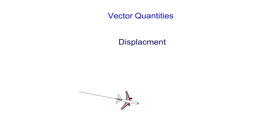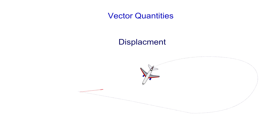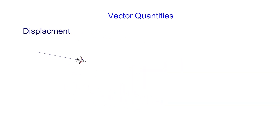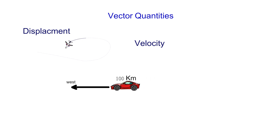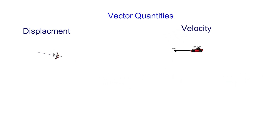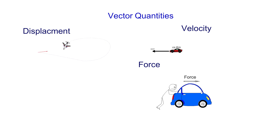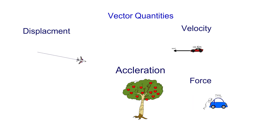A vector quantity is a physical quantity that has both magnitude and direction. Examples of vector quantities include displacement, velocity, force, and acceleration.